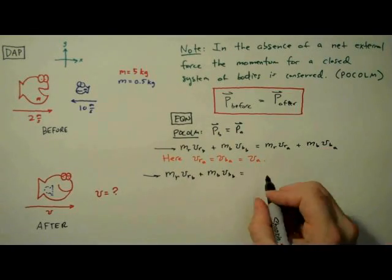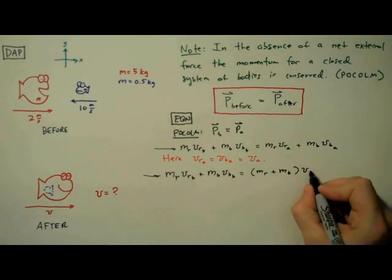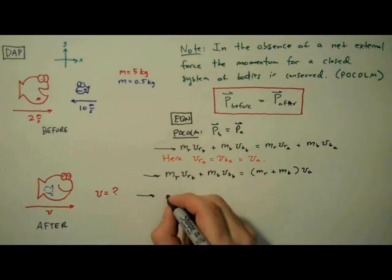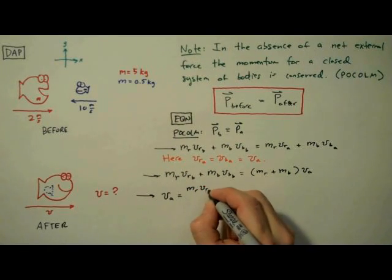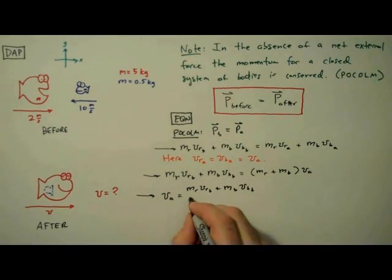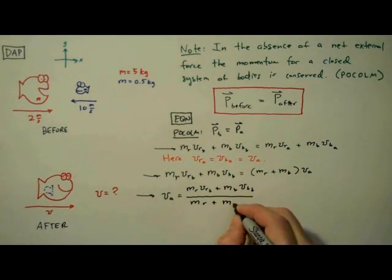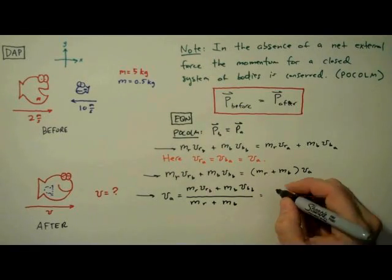I'm also going to factor out VA in order to make this equation a little easier to solve. So dividing both sides by MR plus MB, we're left with an equation which describes the post-collision velocity for two bodies undergoing a perfectly inelastic collision.